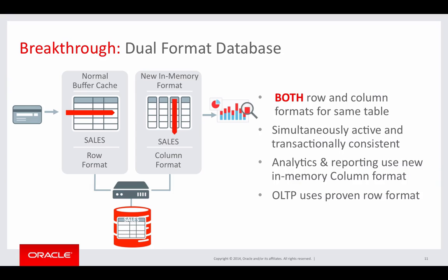What's also unique about Oracle's in-memory column format is the fact that we keep it simultaneously transactionally consistent. That means as soon as data is changed, that change will be reflected in both the row and the column format simultaneously. So if you were running queries against the column format in-memory, you'd never get a different answer from the column store than you would running the same query against the row format in the buffer cache. Oracle has always been able to keep indexes transactionally consistent with tables during any DML or data change operation, and the same is true here with the column store — you can think of it as keeping it in sync with the base table in the row format, just as we would keep an index in sync with a table.